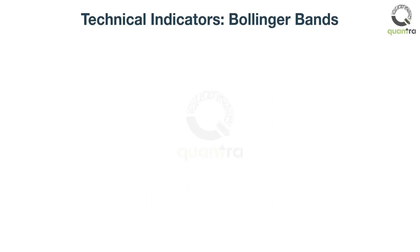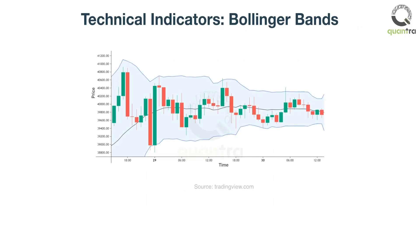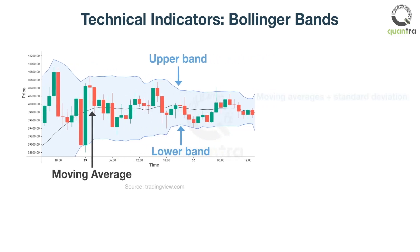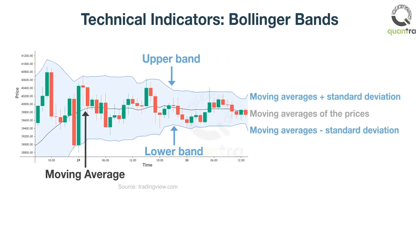Consider another technical indicator, Bollinger Bands. It consists of three lines: the upper, middle, and lower bands. The middle band is the moving average of the prices over a time period. The upper and lower bands are calculated by adding and subtracting standard deviations to the moving averages respectively.